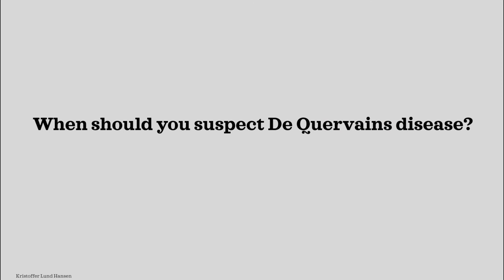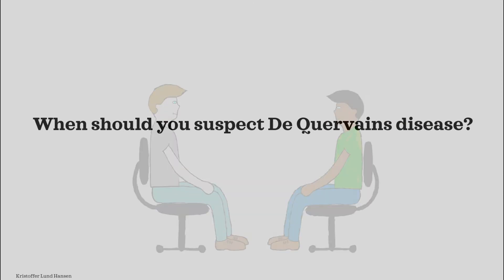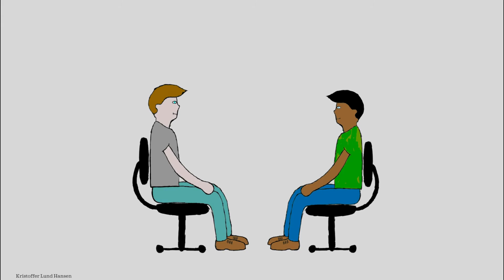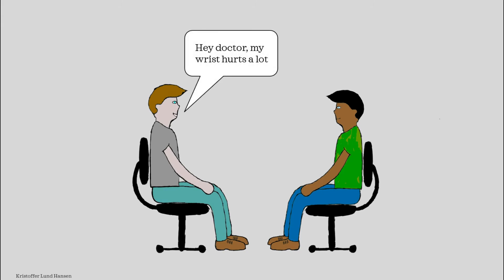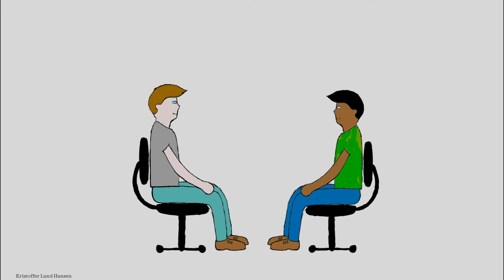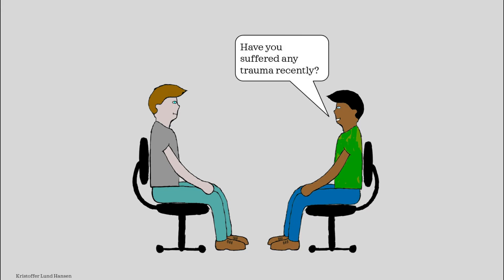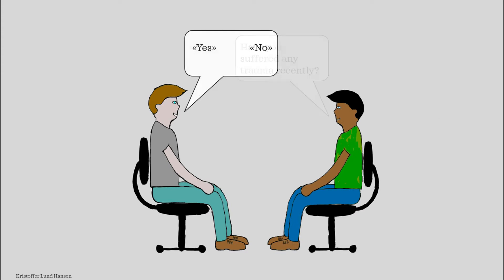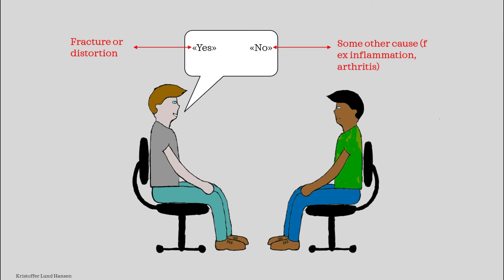First of all, when should you suspect that a patient suffers from De Quervain's disease? The patient will come to you and say their wrist hurts a lot. Some really important questions to ask are whether the patient has suffered any trauma recently, like falling and using their hand to break the fall, or hitting their hand against something. Depending on the answer, you should first consider a fracture or distortion if yes, and if no, think of another cause.